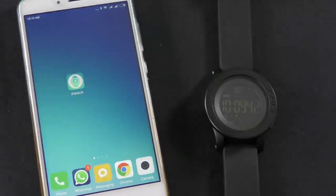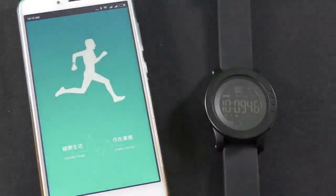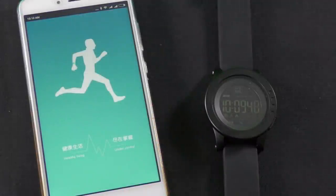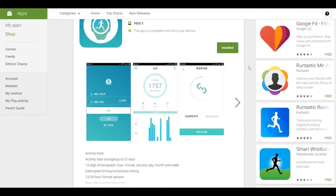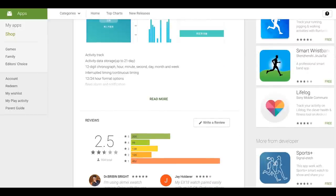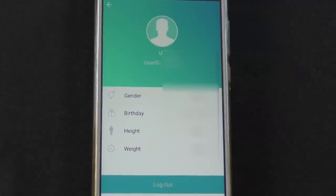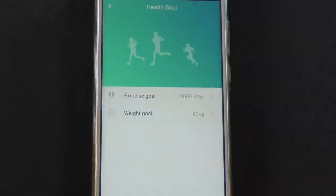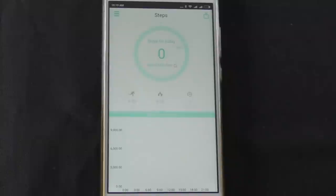The app that synchronizes with the smartwatch is called X Watch and it's available for both Android and iOS devices. You can download it by either scanning the QR code that appears in the user manual or search for it on Google Play or the App Store. After installing the app, you need to register in order to use it. In your first sign-in, you'll need to enter your personal details such as gender, date of birth, height, weight, and health goals.